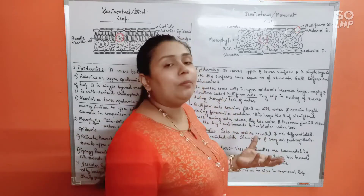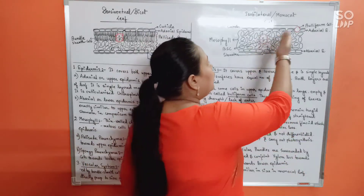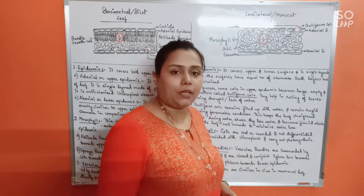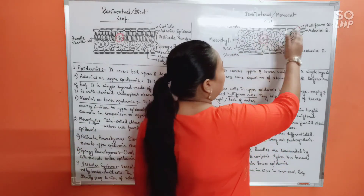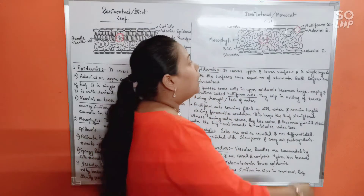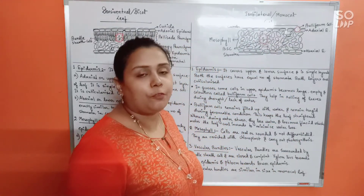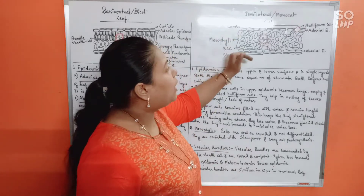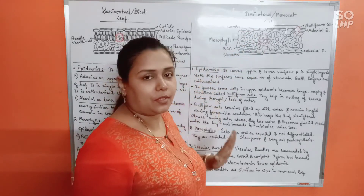Both surfaces are equal in color and equal in stomatal distribution, so upper and lower epidermis possess the same number of stomata. Otherwise everything remains the same — both epidermis layers have cuticle deposition, epidermal cells are a single layer, and they do not possess chloroplasts except in the guard cells.